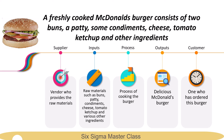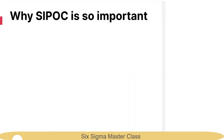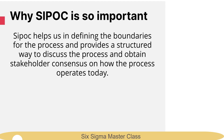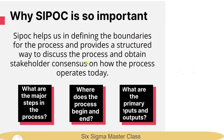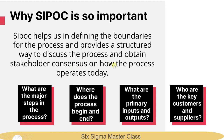That was a simple example to understand how to create a SIPOC. Why is SIPOC so important? SIPOC helps in defining the boundaries for the process and provides a structured way to discuss the process and obtain stakeholder consensus on how the process operates today. It helps answer questions like: What are the major steps in the process? Where does the process begin and end? What are the primary inputs and outputs? And who are the key customers and suppliers?